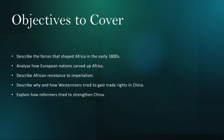Amidst internal turmoil and external pressure, Chinese reformers emerged, advocating for modernization and institutional reforms to strengthen China's position on the world stage. They implemented measures aimed at modernizing China's military, education system, and government bureaucracy. However, their efforts were met with resistance from conservative elements within the Qing dynasty, ultimately leading to the failure of what is known as the Hundred Days Reform.